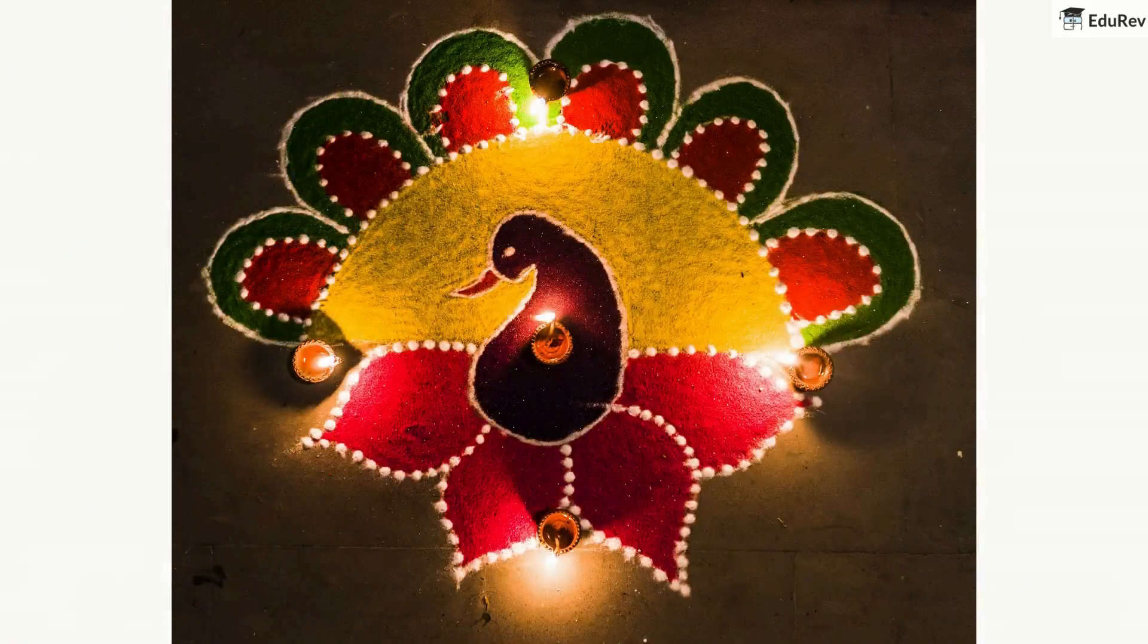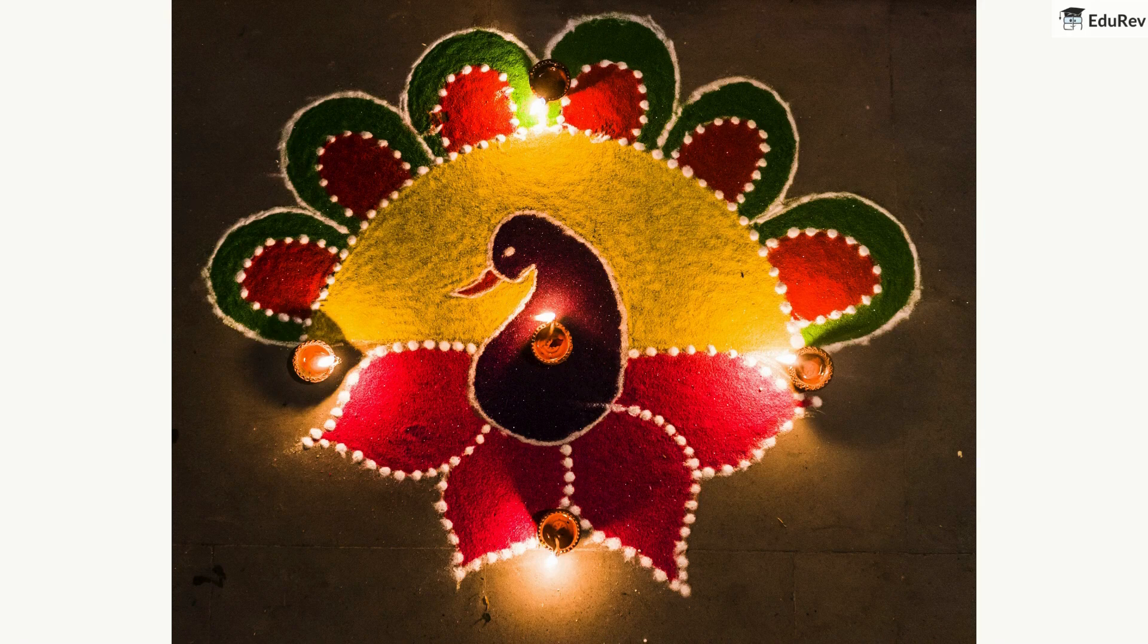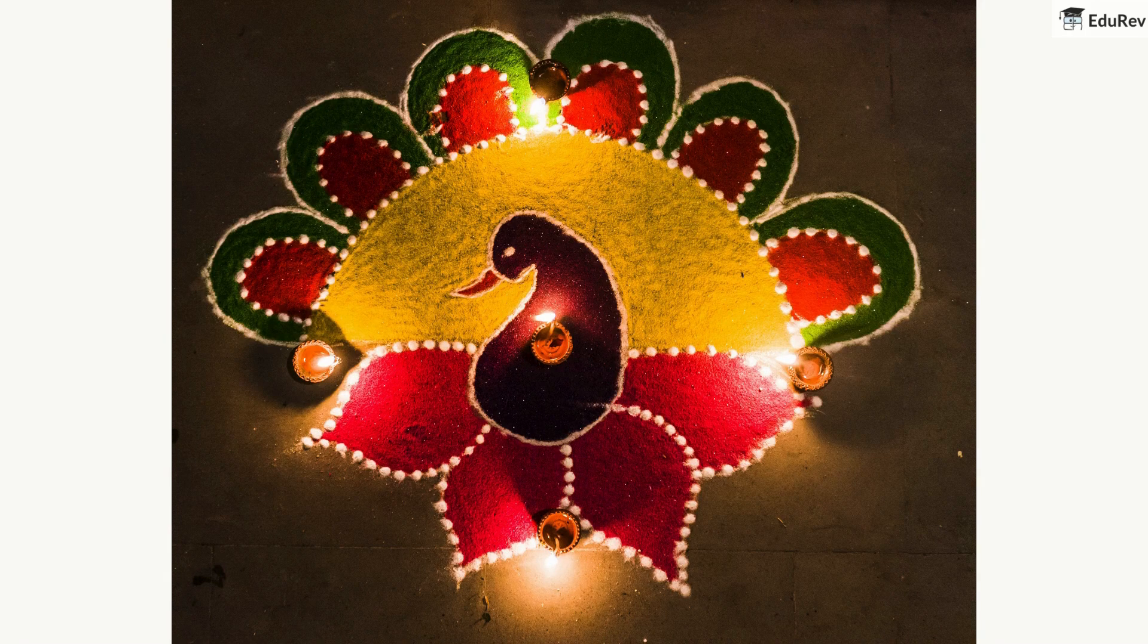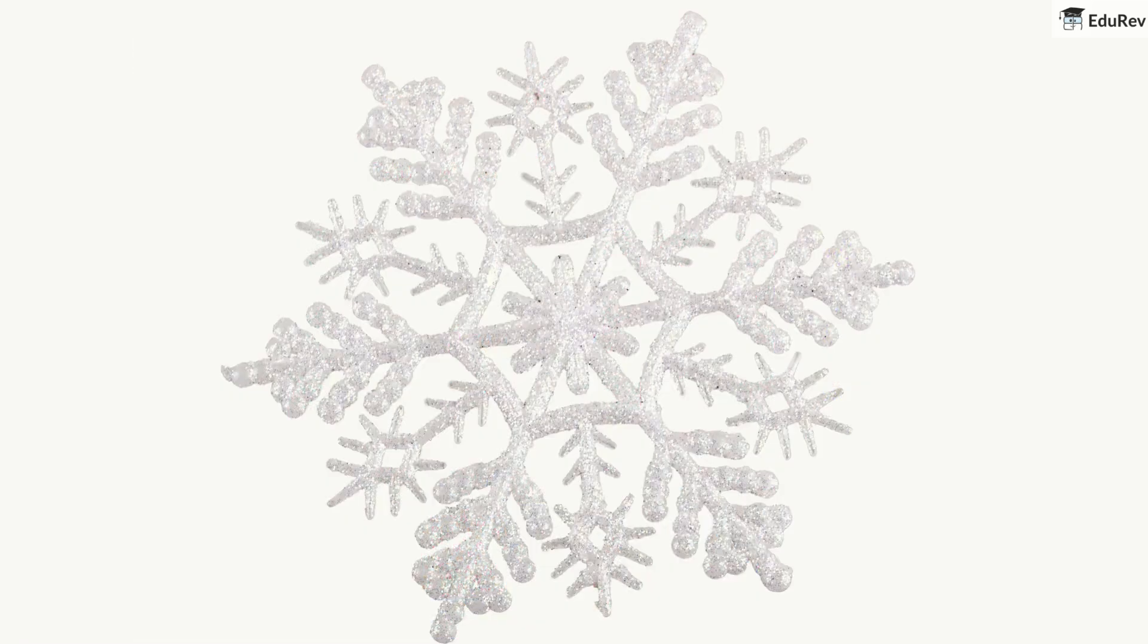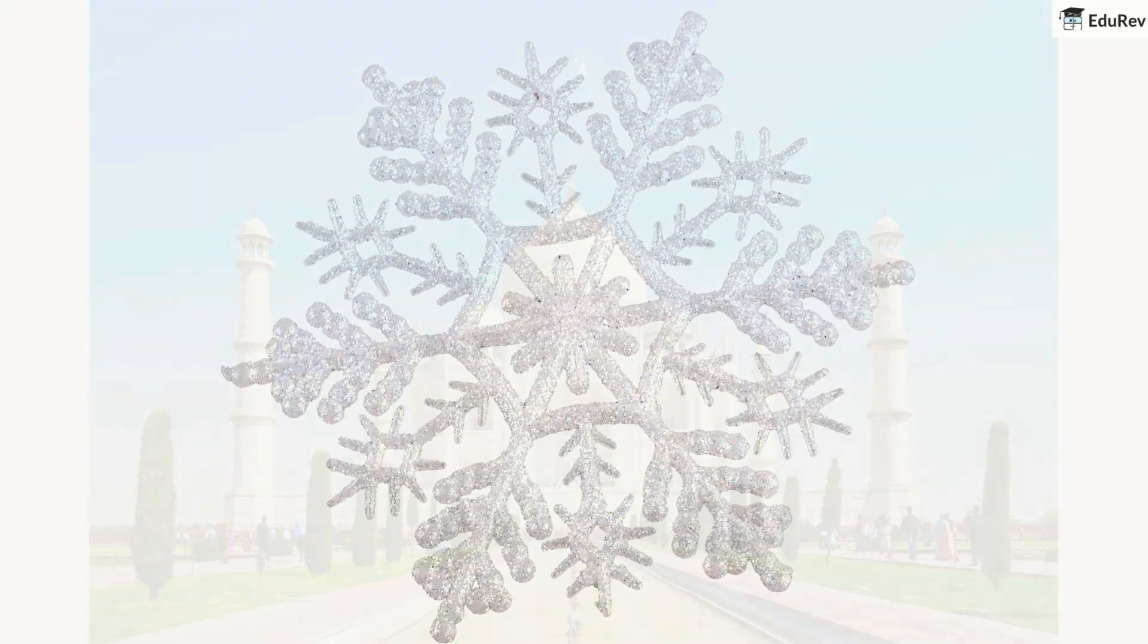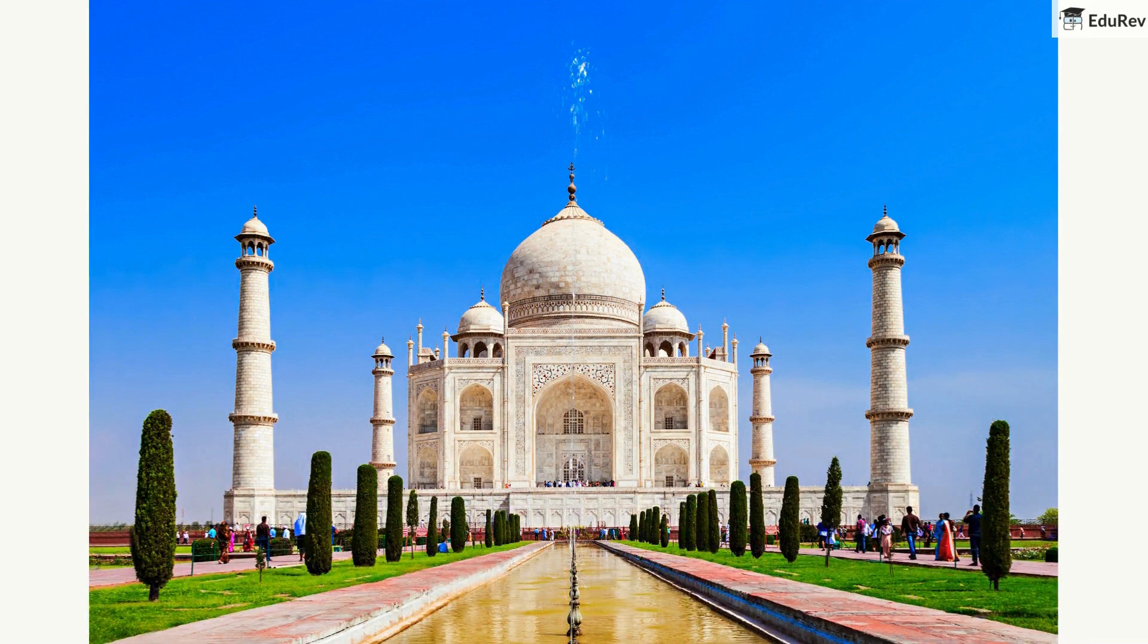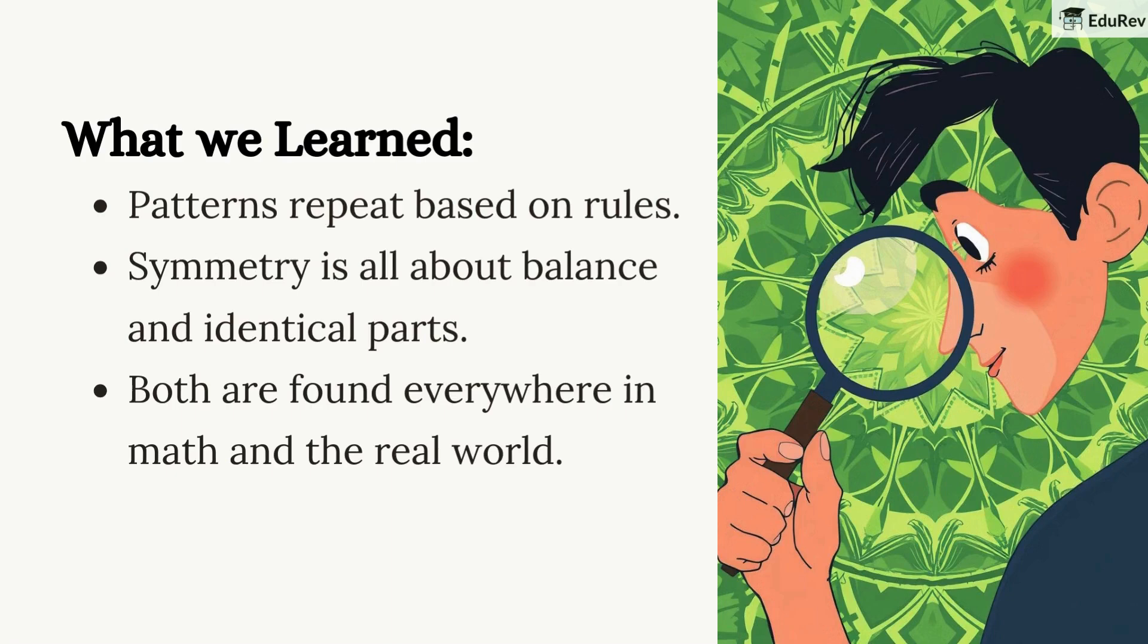Let's find patterns and symmetry in the real world. Have you seen a rangoli? It's full of beautiful symmetrical designs. How about a quilt? Quilts often have repeating patterns that are symmetrical too. And don't forget nature - a snowflake is a perfect example of natural symmetry. Symmetry and patterns are also found in buildings and art like the Taj Mahal.